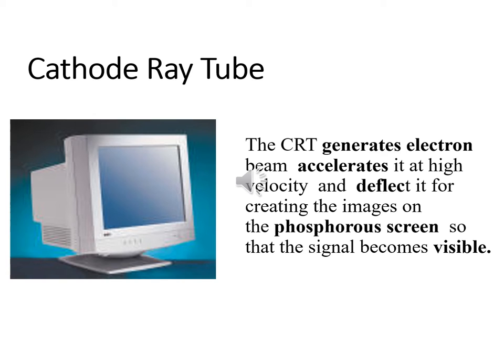The cathode ray tube, or CRT, is a display screen which produces images in the form of a video signal. It is a type of vacuum tube which displays images when the electron beam strikes a phosphor screen.